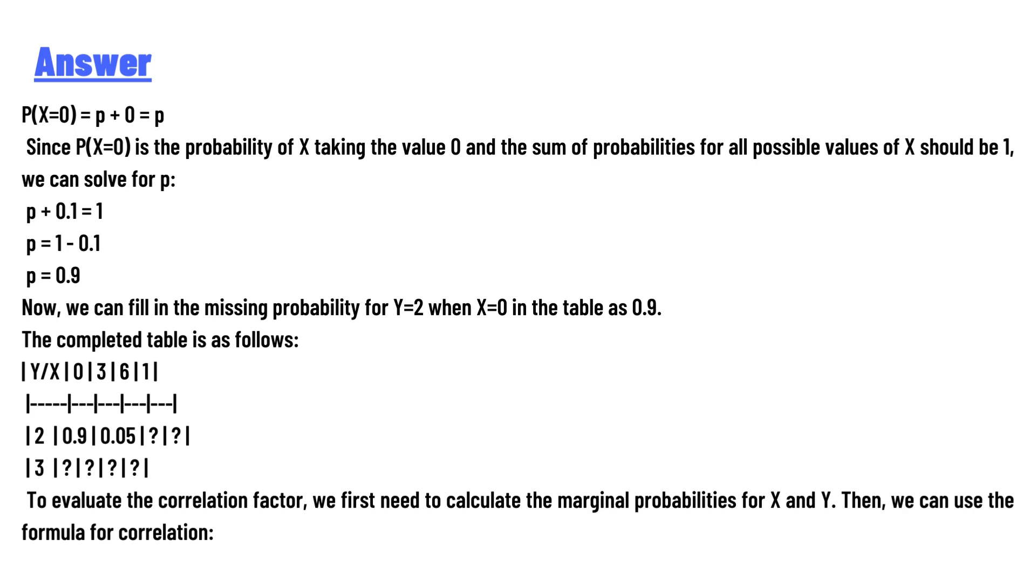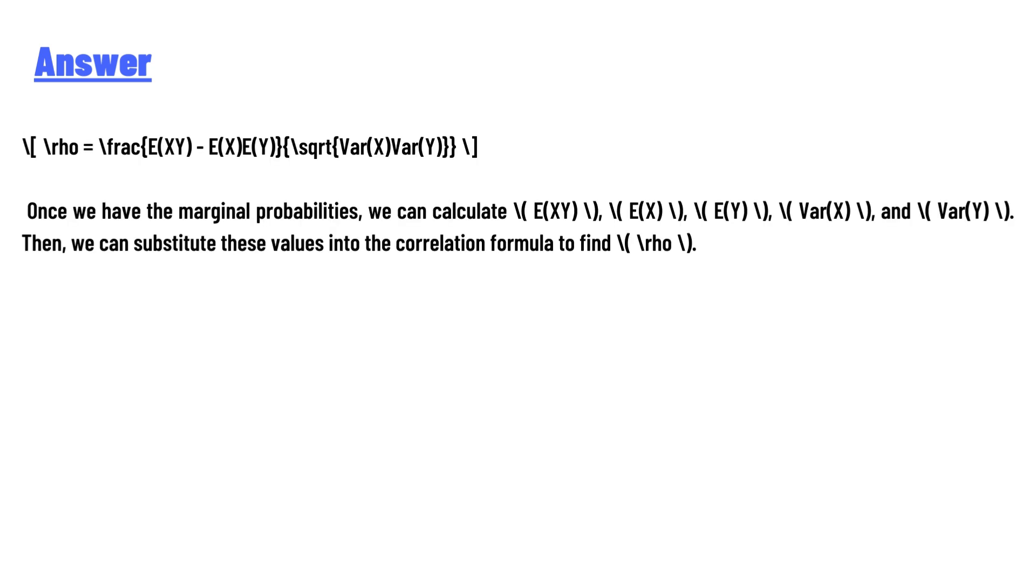Then we can use the formula for correlation: ρ = [E(XY) - E(X)E(Y)] / [√Var(X) × √Var(Y)]. Once we have the marginal probabilities, we can calculate E(XY), E(X), E(Y), Var(X), and Var(Y). Then we can substitute these values into the correlation formula to find ρ.